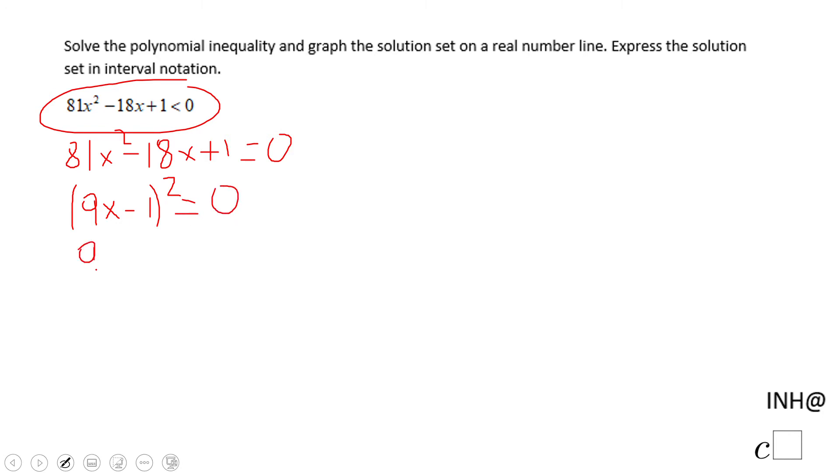So that tells me 9x minus 1 equals zero, which is going to give me the solution 9x equals 1 and x equals 1 over 9. That's the only time when this polynomial equals zero.